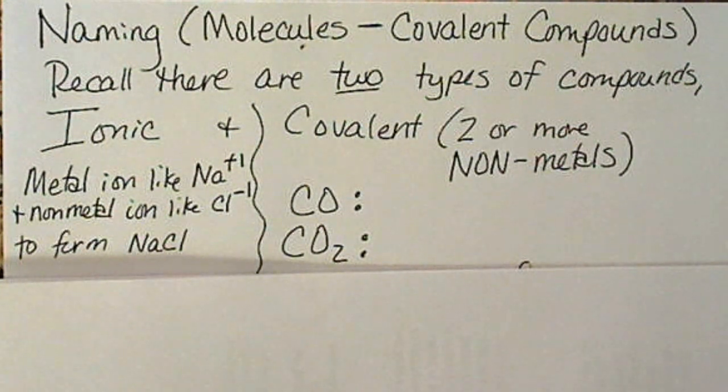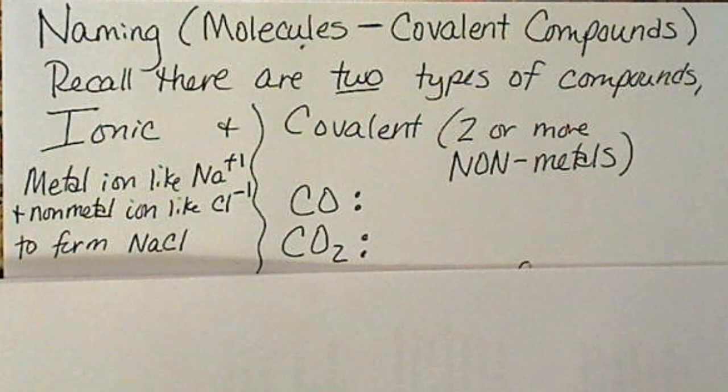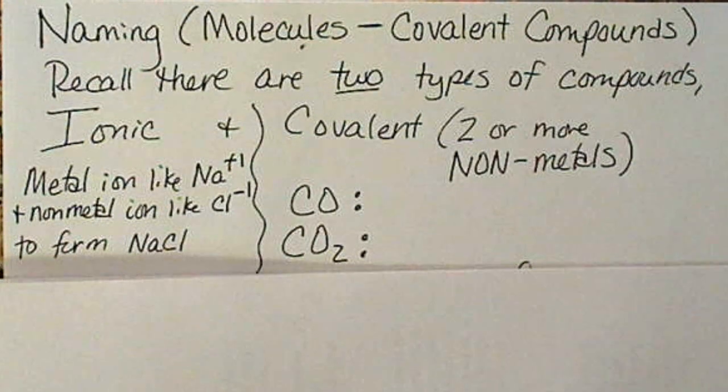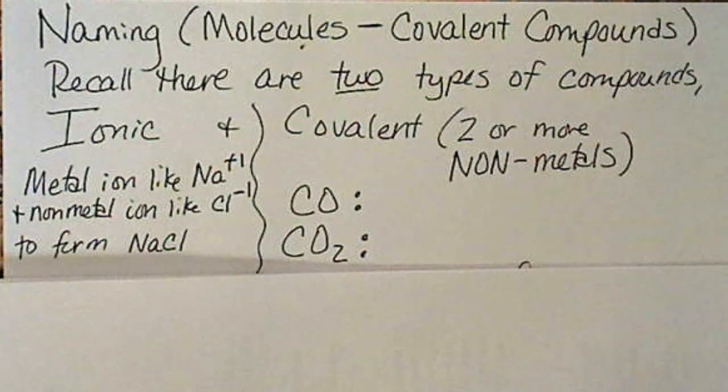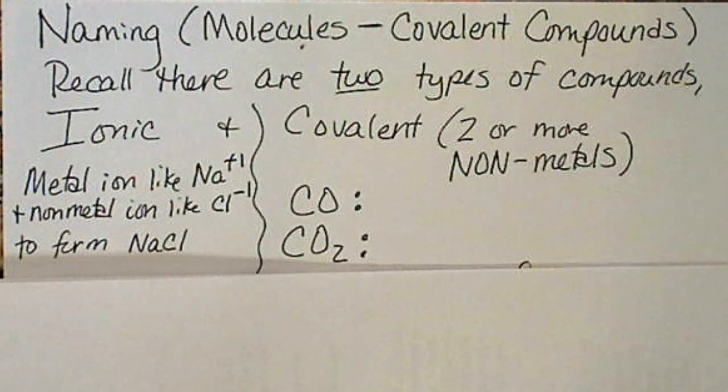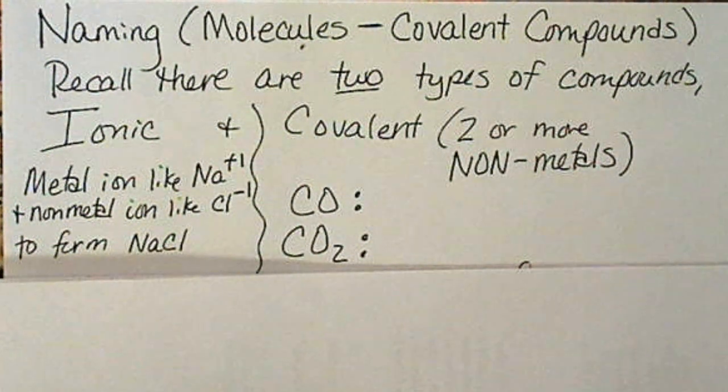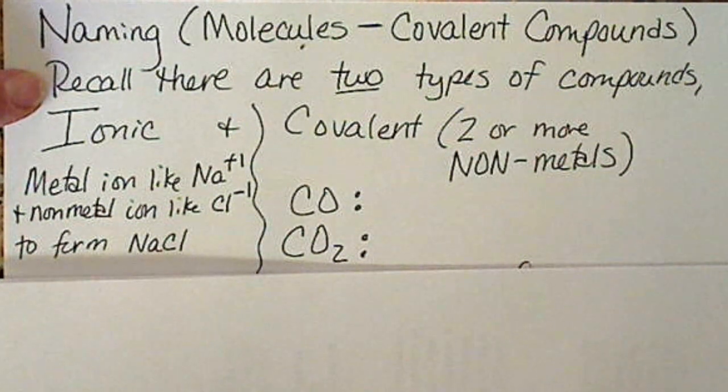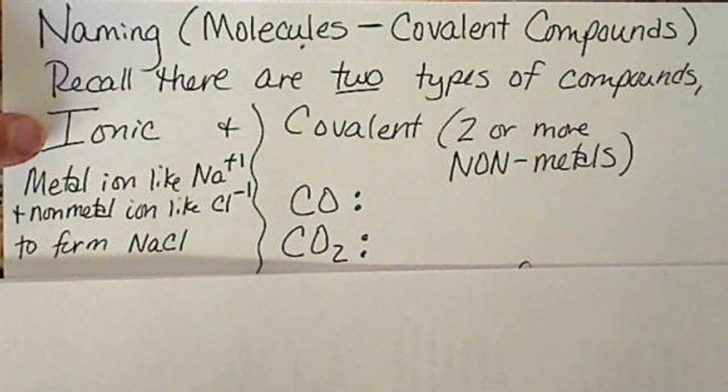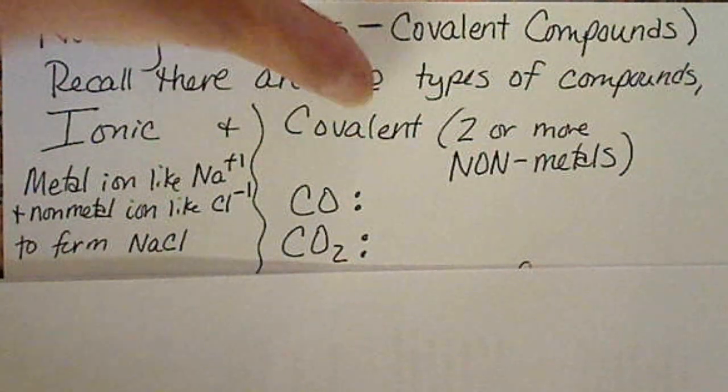When we're naming covalent compounds, which are also referred to as molecules, we're going to use Greek prefixes to do so. But the most important thing for naming is to know what type of compound we are naming. So remember there's two types of compounds, ionic and covalent.